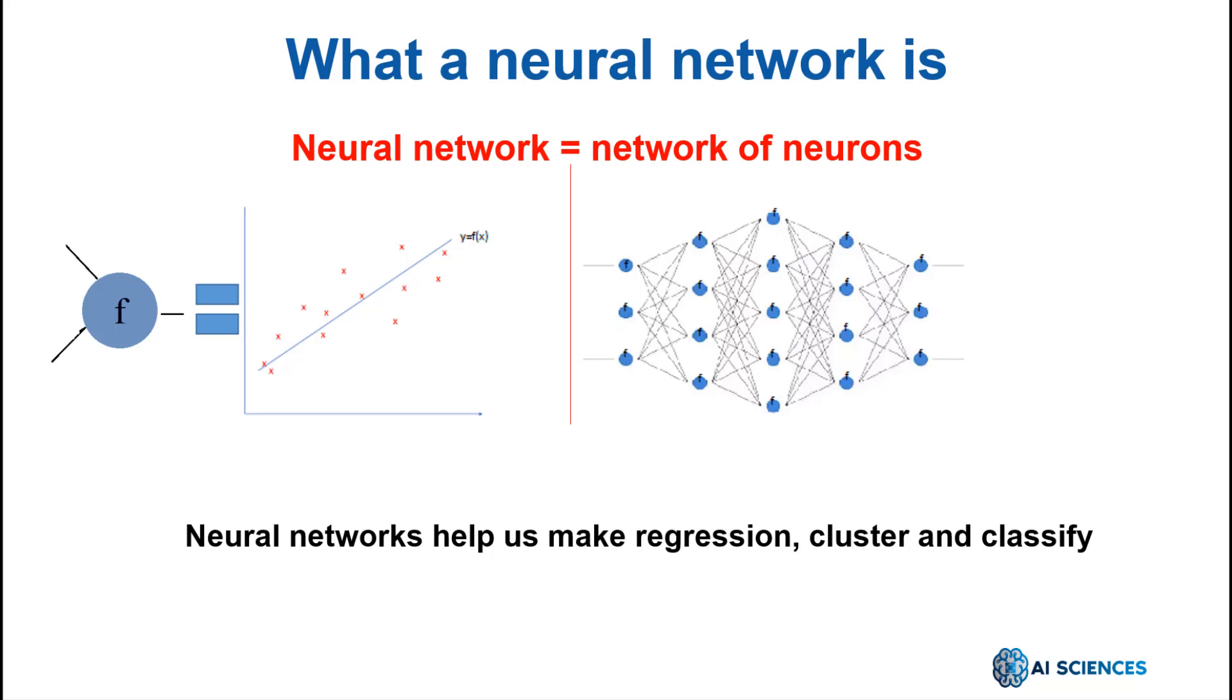Neural networks help us cluster and classify. They help to group data according to similarities among the example inputs, and they classify data when they have the output variable in the existing data set to learn from it.